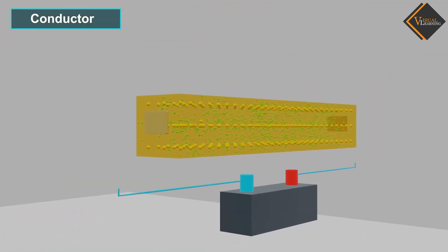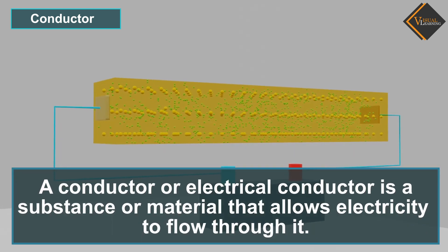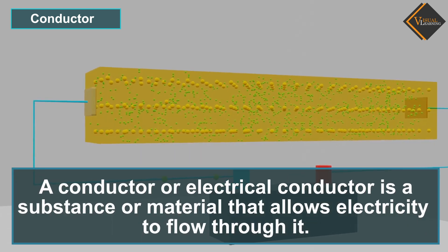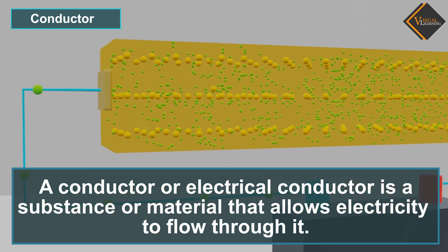In simple terms, a conductor or electrical conductor is a substance or material that allows electricity to flow through it.